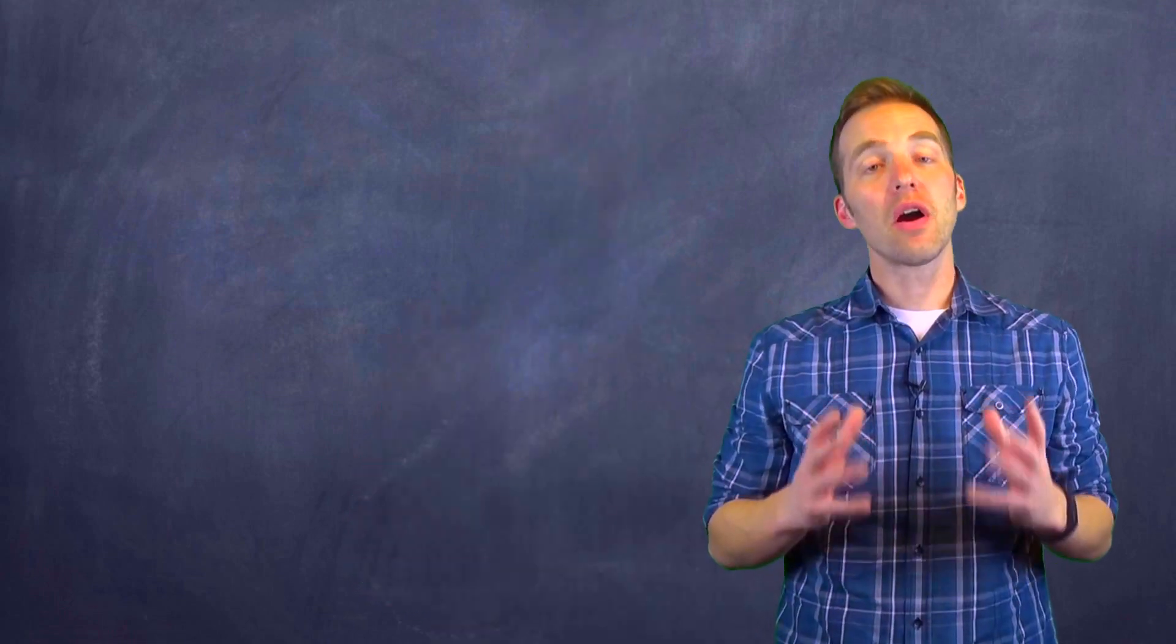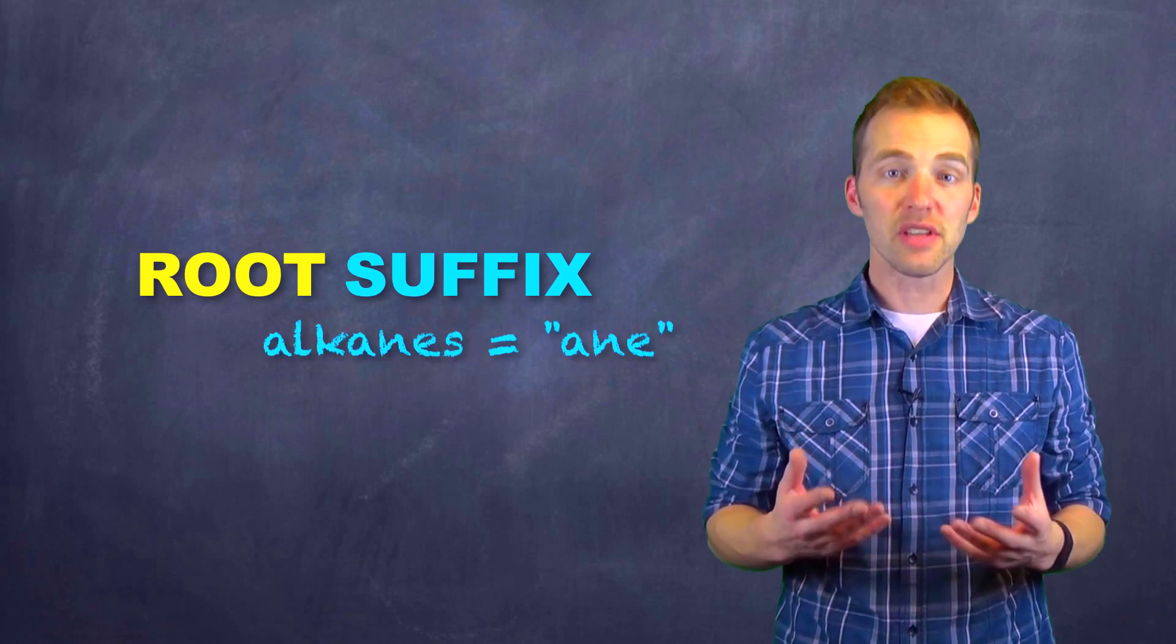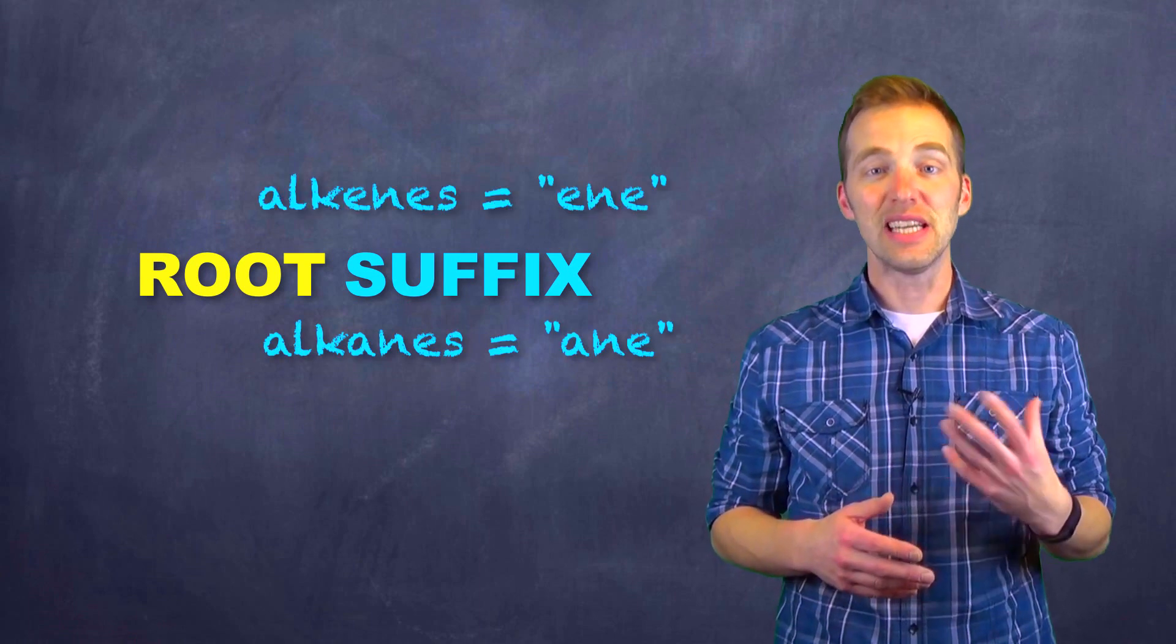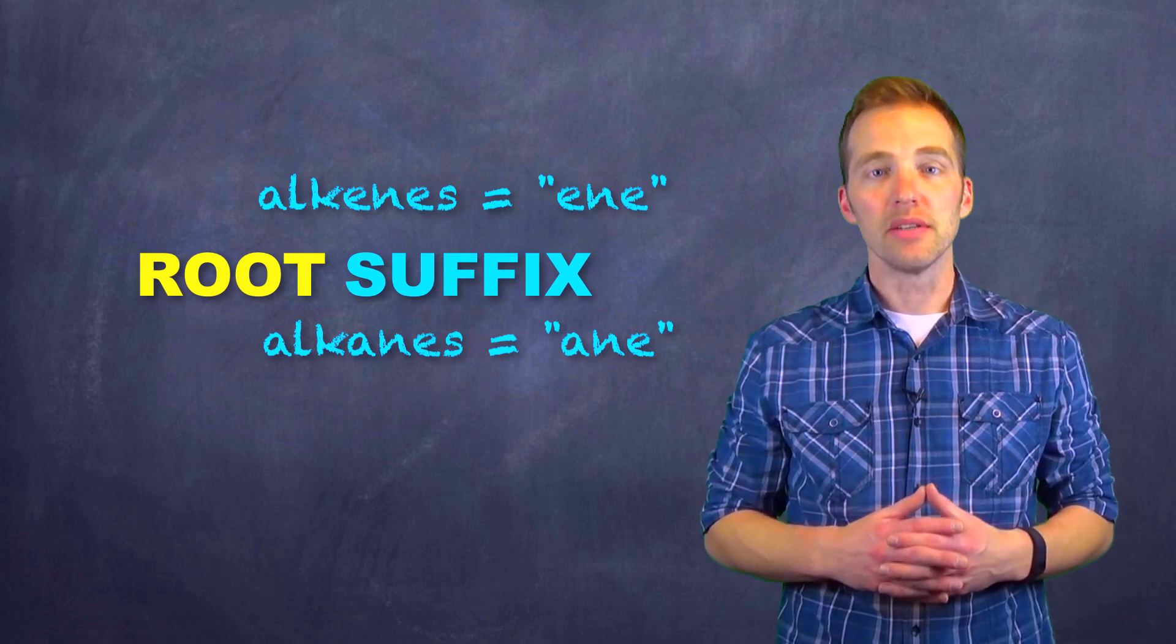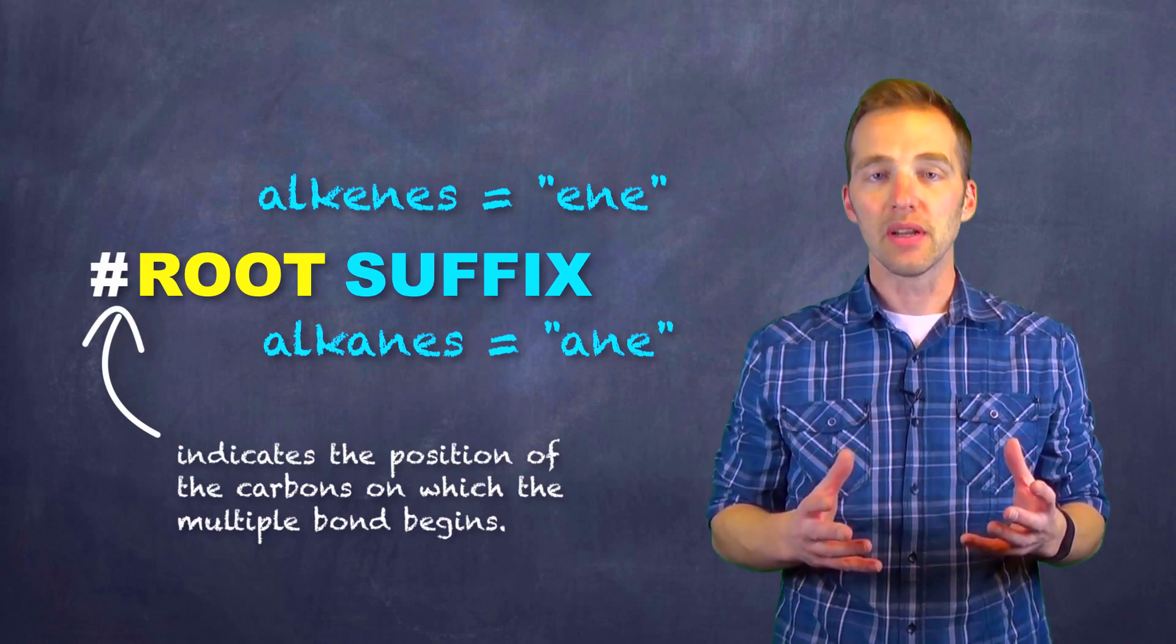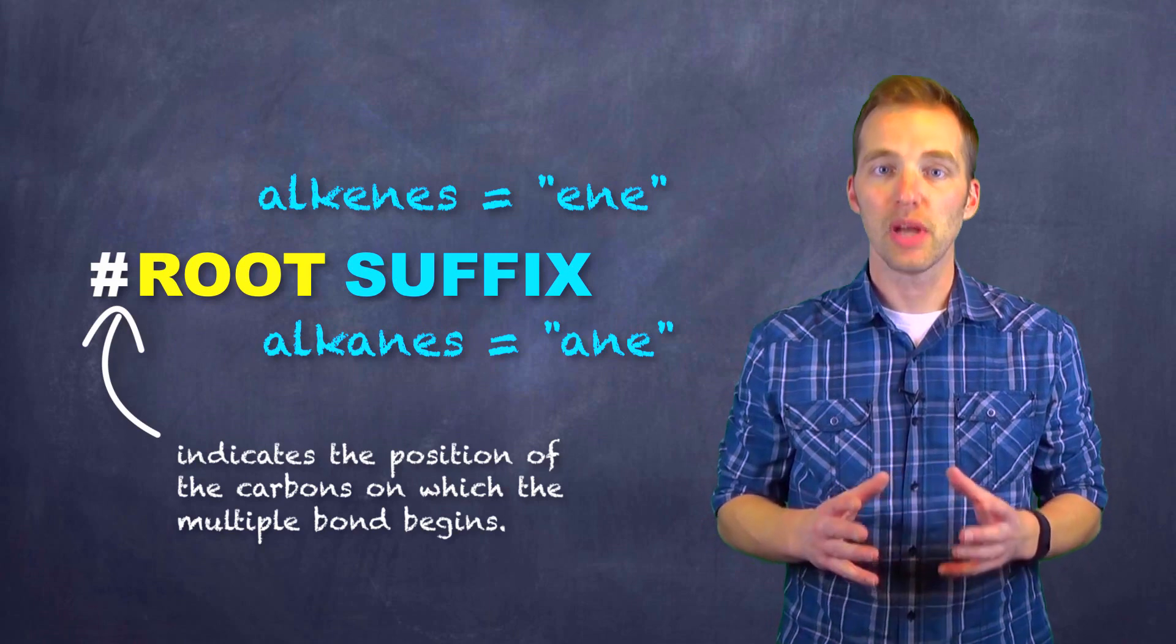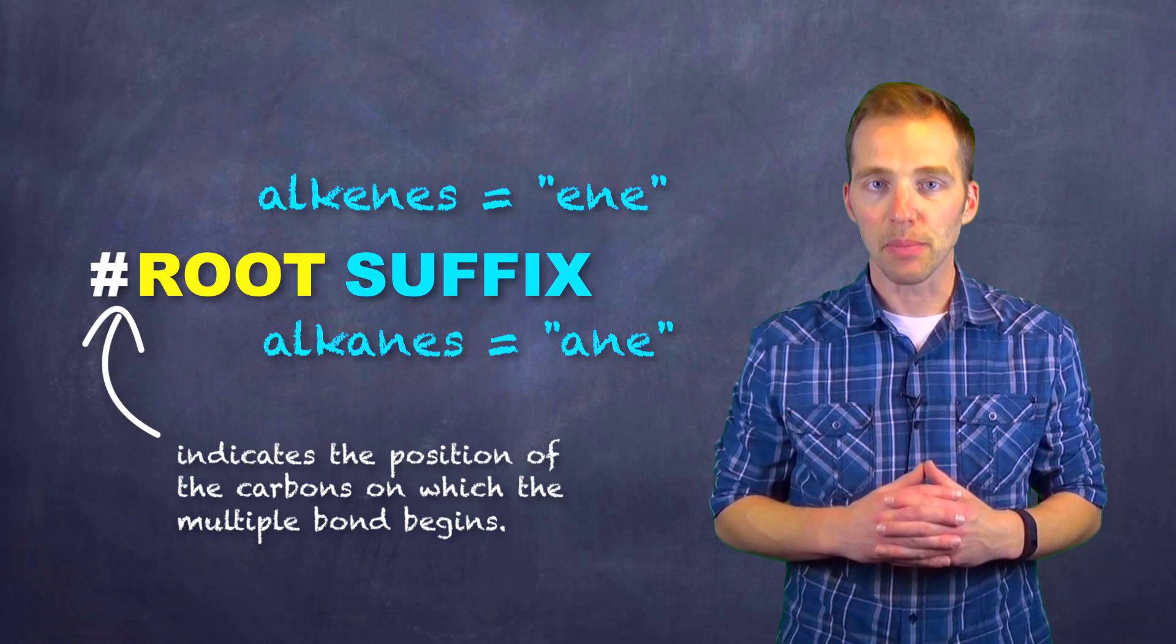And there's a way we go about naming this. It follows very similar to the way that we name alkanes and branched alkanes. However, there are some differences. With alkanes, the ending or suffix is A-N-E. For alkenes, the ending is E-N-E. And much like multiple bonds, if we have a double bond in there, we have to indicate on which carbon this double bond is present. Now we always want to have the lowest possible combination of numbers.